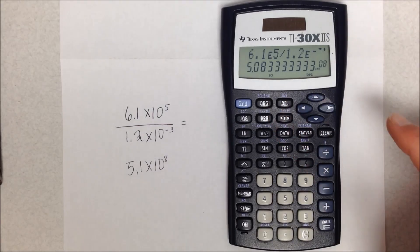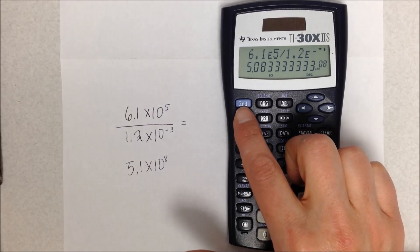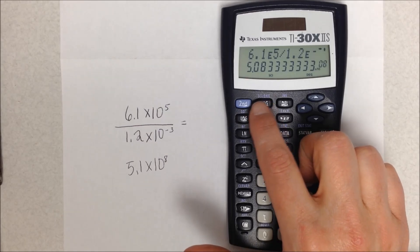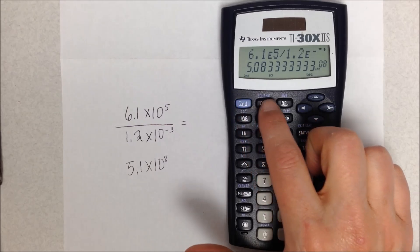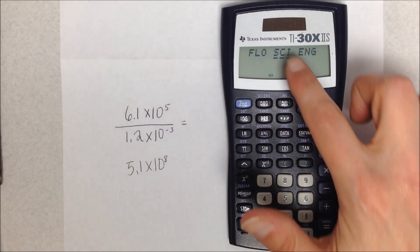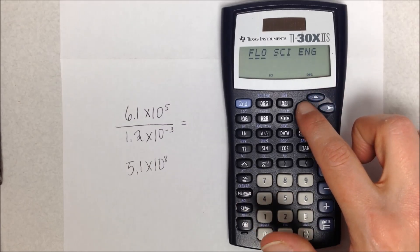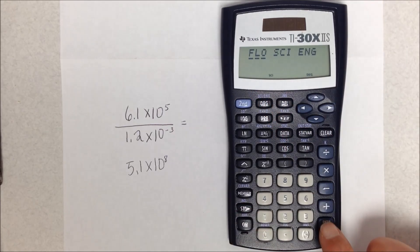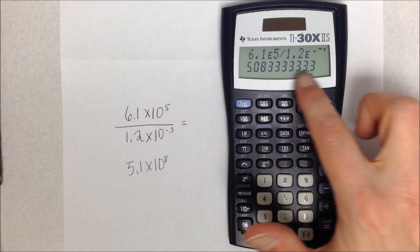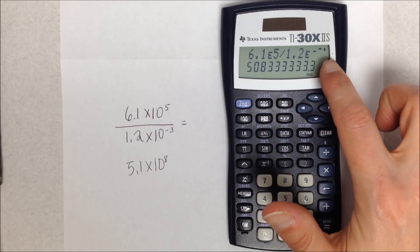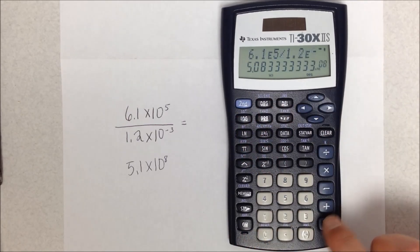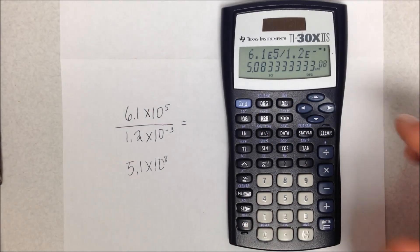Now sometimes your calculator won't be showing it in scientific notation, or you want to get something out of scientific notation. What you do is you use the second button again, and here where it has DRG above it, you see SCI ENG—so scientific, engineering. I can hit second and scientific engineering, and I want to make sure SCI—that will put it in scientific mode. If I want to just see the number not in scientific notation, I choose FLO for float, and that will show me the number not in scientific notation. So here you don't see the times 10 to the eighth—you see the whole number written out. And I can go back to scientific notation, and now again it shows it in scientific notation.